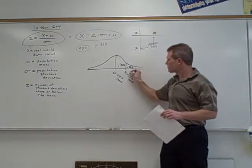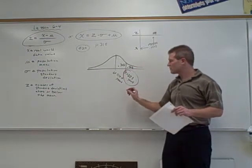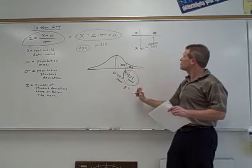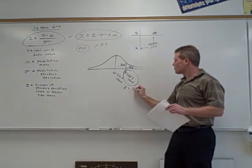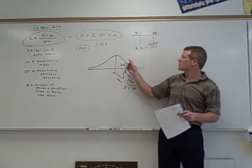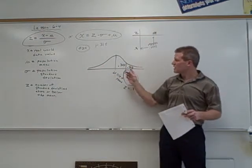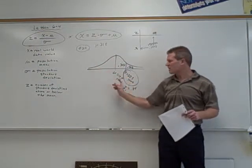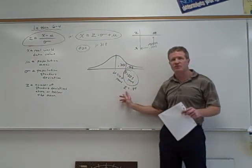So the z-score that corresponds with 22.8 years old is to the right of the mean, so it would be positive 0.84. One real common mistake is if you're trying to find a z-score over to the left, you'll forget to put a negative on it. The chart always gives you a positive z-score, and that's the reason I like to have you draw the pictures. If the z-score's on the left, you have to make sure you put a negative on that z-score.